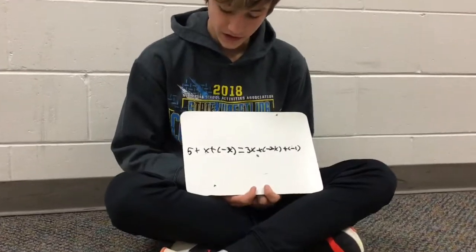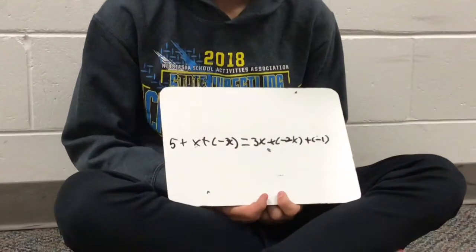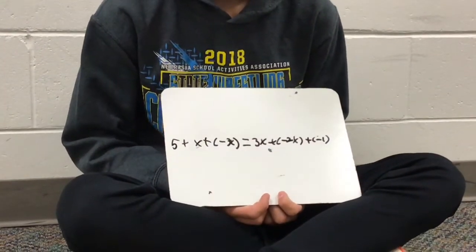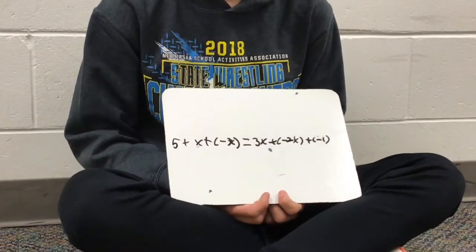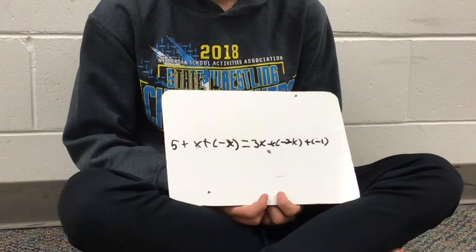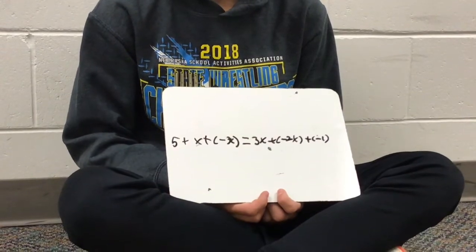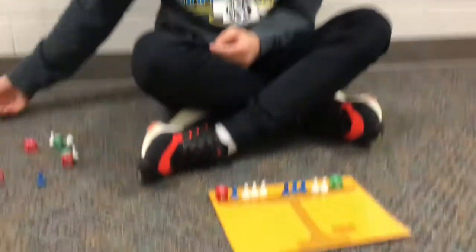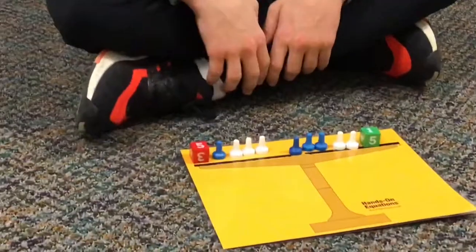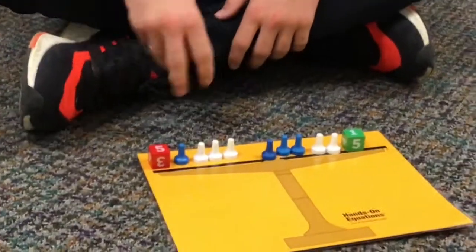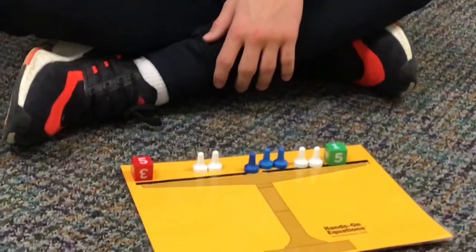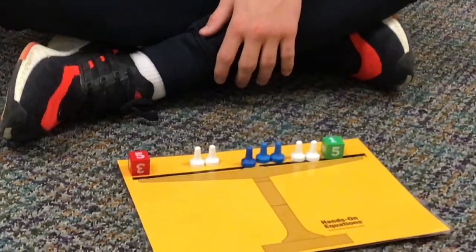The next problem is 5 plus x plus the opposite of 3x equals 3x plus the opposite of 2x plus negative 1. The first thing I'm going to do is take off the pairs of zero on that side.